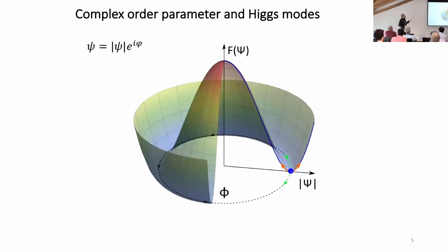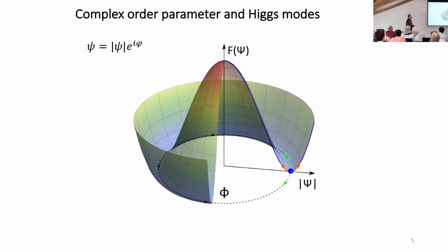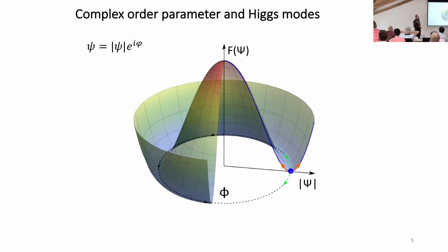What are these Higgs modes? If we look at the complex order parameter of a superconductor and plot the free energy in the famous Mexican hat potential, sitting at the minimum we have two types of collective excitations. Around the rim are the phase modes, which for superconductors are lifted to the plasma frequency due to the Anderson-Higgs mechanism. The lowest-frequency excitations that remain are the amplitude oscillations - the Higgs oscillations.